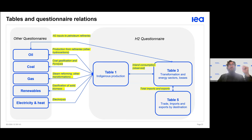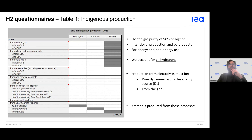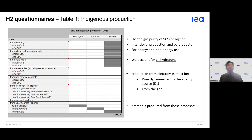We must match specific values across questionnaires. The first table shows local production, where we obtain hydrogen through different technologies, listing the various energy sources. We also distinguish whether CCS technology — carbon capture and storage — was used. A reminder: the hydrogen purity here should be 98% or above. The unit used is terajoules (TJ).